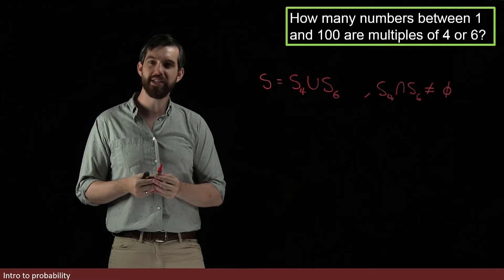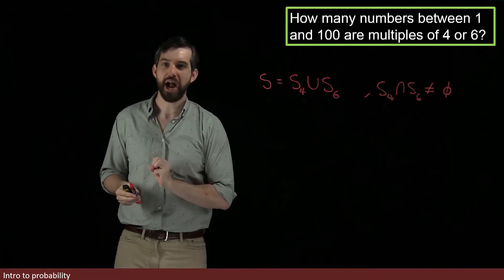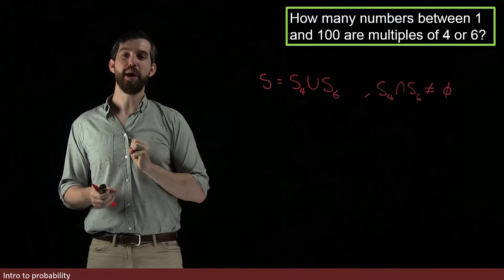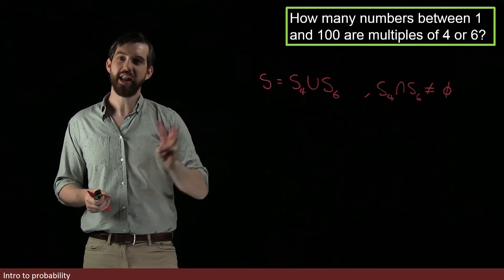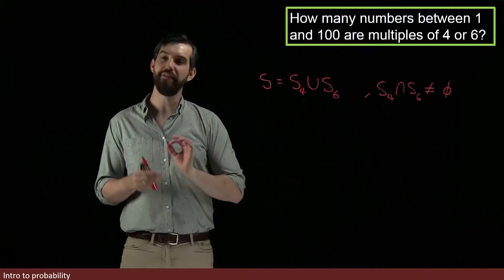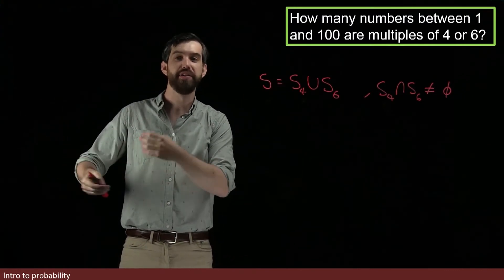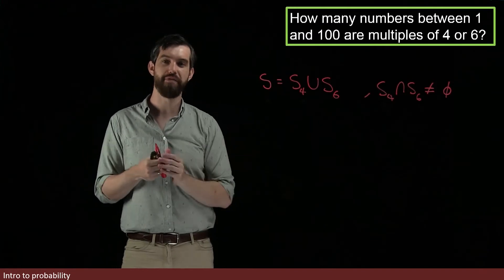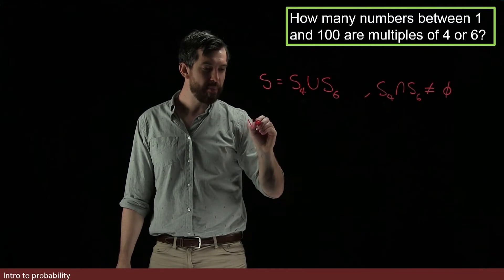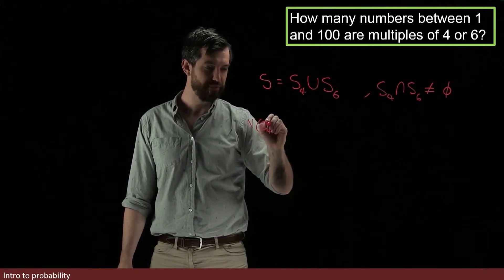Therefore, my formula has three parts to it. I need to figure out the number of things in S4. I need to figure out the number of things in S6. And I need to figure out the number of things in the intersection of S4 and S6. And then I can apply my formula. The sum of the two subtract off the intersection. So, let's try to figure out the number in S4, the multiples of 4, first.